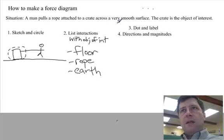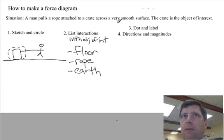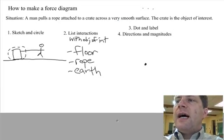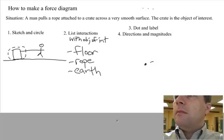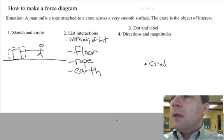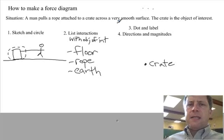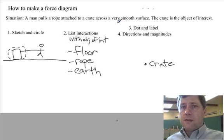Now, we're ready to make the actual force diagram. Step three: Dot. Label. The dot represents our object of interest. This reminds us that we're treating the object of interest as a particle.